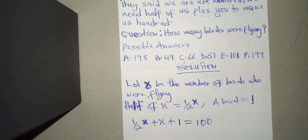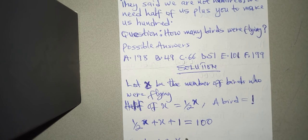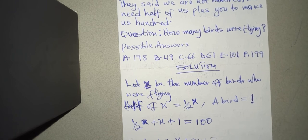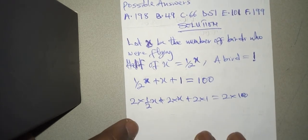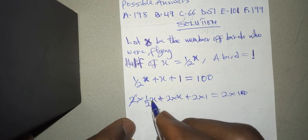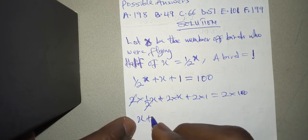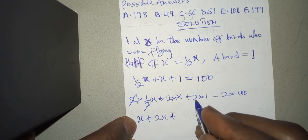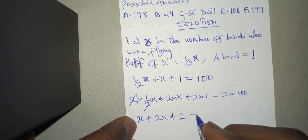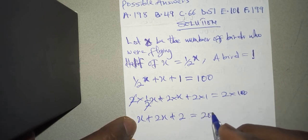All right, so we have a fraction. We need to clear the fraction by multiplying through by 2, so that we are going to say that 2 times 1 over 2x plus 2 times x plus 2 times 1 is equal to 2 times 100. All right, so we have 200.